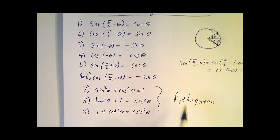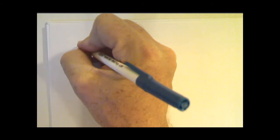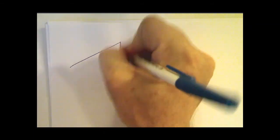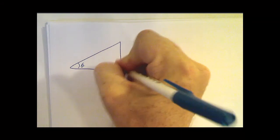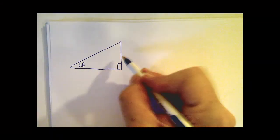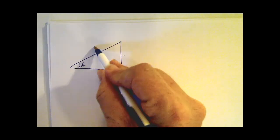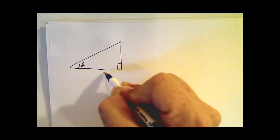And the thing about these identities is they all refer to very specific triangles. So remember, SOH CAH TOA. If we've got an angle theta, and we're going to assume for now that it's between 0 and 90 degrees, the sine is opposite over the hypotenuse, cosine is adjacent over hypotenuse, tangent is opposite over adjacent.